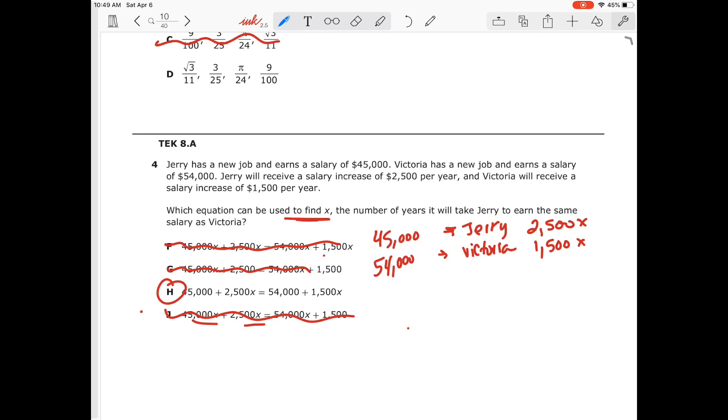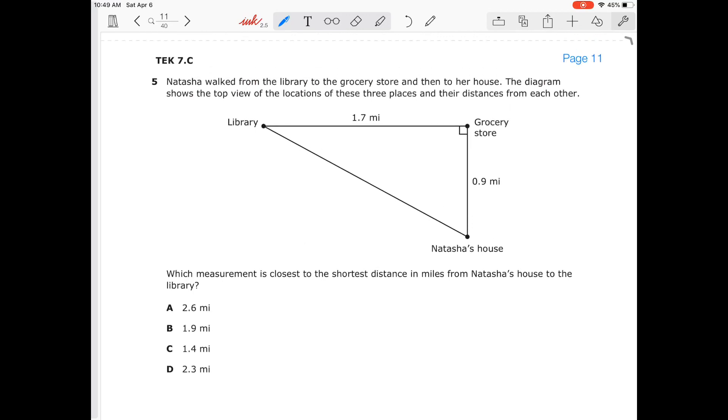Let me see if I can get one more in this video. Yeah, I can get one more in. Number five is really easy. Natasha walked from the library. Yes, that's my name, to the grocery store and then to her house. The diagram shows the locations of these three places and the distances from each other. Which measurement shows the closest distance in miles from Natasha's house to the library? All right, well so we're talking about this distance from the library to Natasha's house. It's a straight line. This is a right triangle. So that means that we can use this fun little thing called Pythagorean theorem.